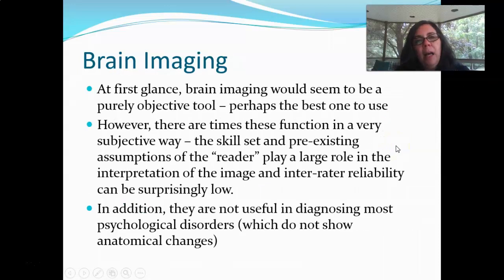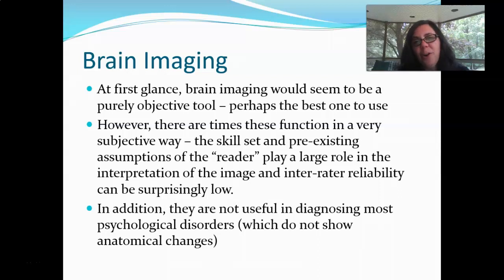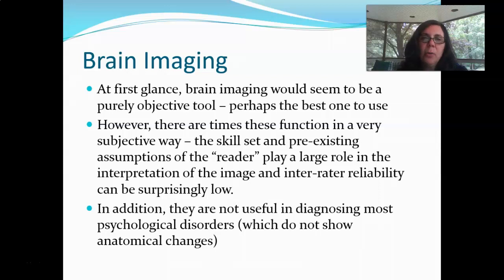Finally, we sometimes use brain imaging to collect information, though not as often as people imagine. There's no easy way to look at a brain and see if somebody has most of the diagnostic categories we'll talk about. It would seem like a purely objective tool if widely available, but we still get a lot of subjectivity because somebody has to interpret the images, and there is a lot of subjectivity in that interpretation. Reliability can therefore be low, though validity is very high because it is an objective image — it really comes down to that skill set and interpretation.